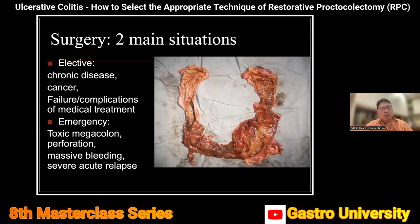In the elective situation, first there's chronic disease — especially chronic relapsing disease — where patients keep relapsing despite treatment of various sorts, perhaps stronger and stronger medication. Secondly, there is always the risk of cancer, especially in long-standing pan-colonic ulcerative colitis. And especially in young patients, we have complications of medical therapy and failure of medical therapy. Those patients are what we call patients that need elective surgery.